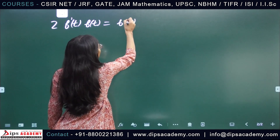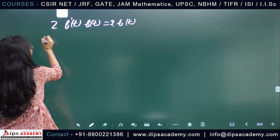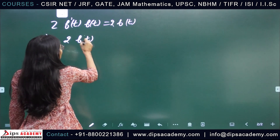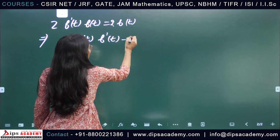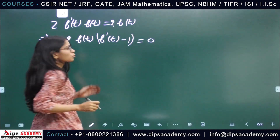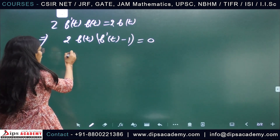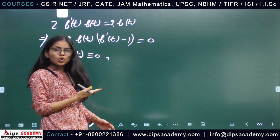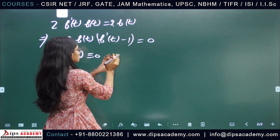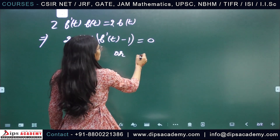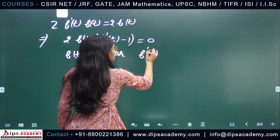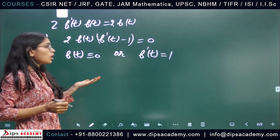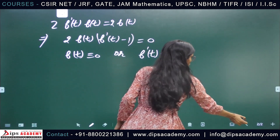Simplifying 2f(t)·f'(t) = 2f(t), we get 2f(t)·(f'(t) − 1) = 0. From here we have two choices: either f(t) is identically 0 for all t in [0, 1], or f'(t) equals 1.